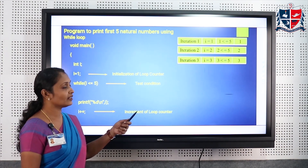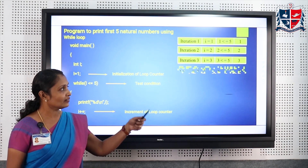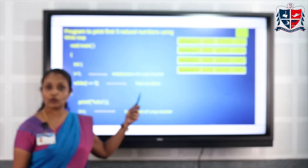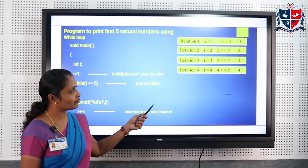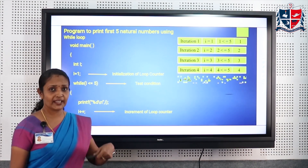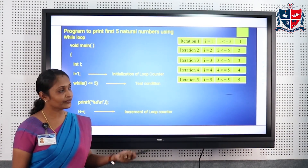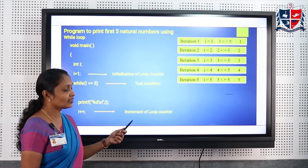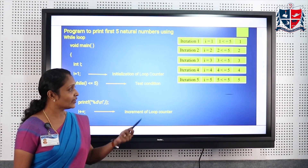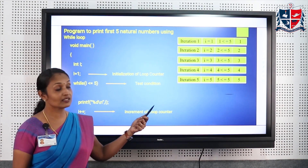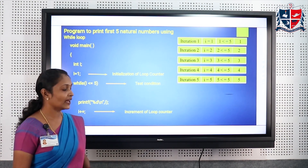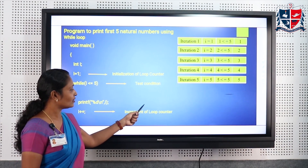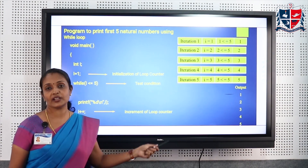Again it is incremented: i becomes 3, 3 <= 5 is true and 3 is printed. In iteration four, i becomes 4, 4 <= 5 is true and 4 is printed. Again incremented, i becomes 5, 5 <= 5 is true and 5 is printed. After that i is incremented to 6, and 6 <= 5 is false, so the loop is terminated and we get the output 1 2 3 4 5.